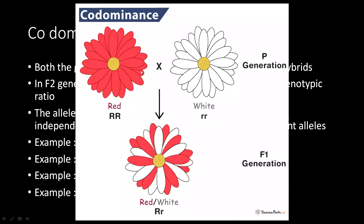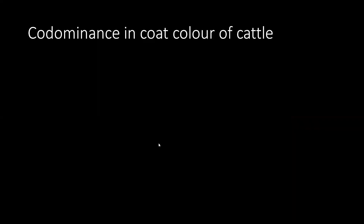In co-dominance, a red flower crossed with a white flower gives petals that are completely red and completely white in patches. Compare this to incomplete dominance where the flower color completely changed to pink. Here, both the red shade and the white shade are present separately.